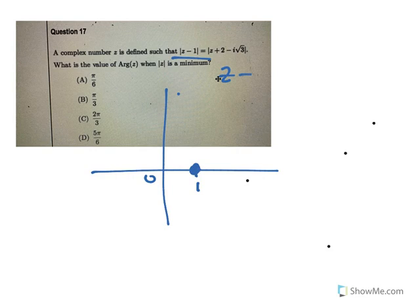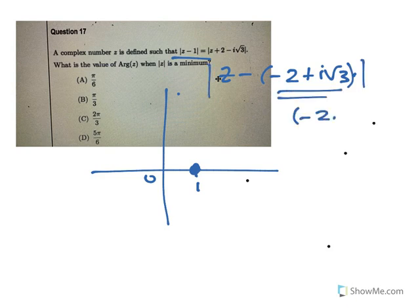That equals the distance that z is from - if you factorize out the minus, that's i root 3. So the distance z is from minus 2, root 3. If you go to minus 2 and then up to root 3, that's going to be there.